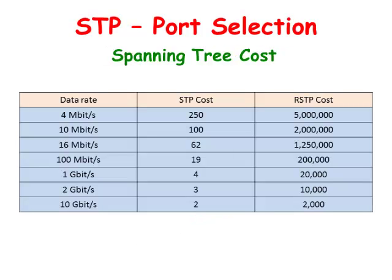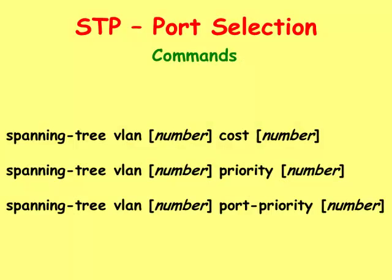The cost is based on the port speed by default, but the value can be modified by the network administrator. The faster the interface transfers data, the lower the cost. For this lab, the default value for Fast Ethernet is 19 and the default value for Gigabit Ethernet is 4. The spanning-tree vlan cost command is used to modify the value of the interface port. The spanning-tree vlan priority command is used to modify the bridge priority value of a switch. The spanning-tree vlan port-priority command is used to modify the port priority value of an interface.